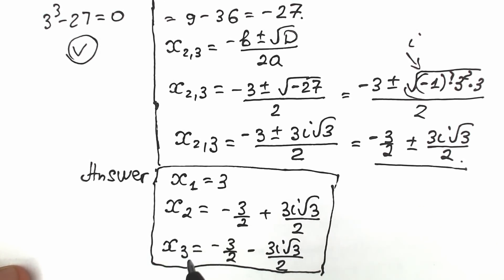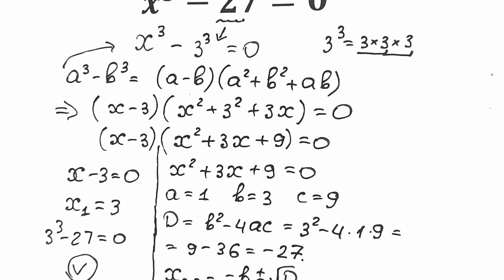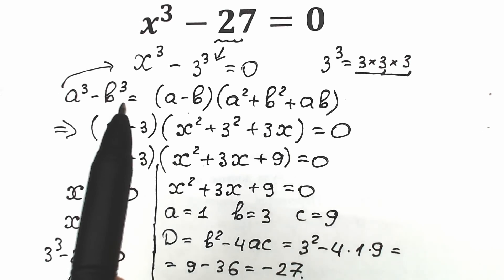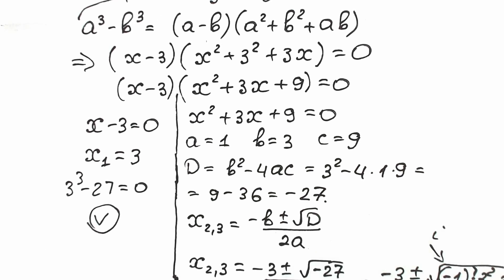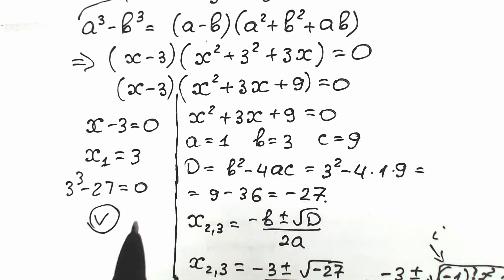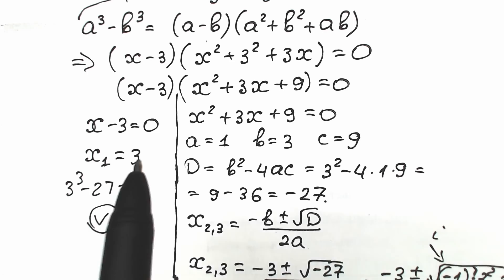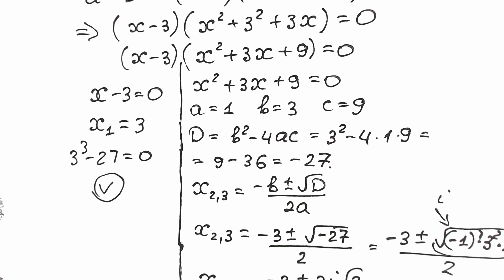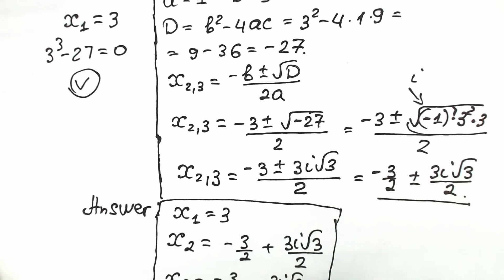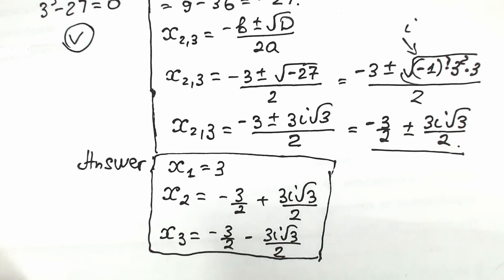When you solve this challenge in just one line, it is not good for your teacher to read. Imagine writing x equals 3 as the only solution on an exam. But if you solve it step by step like this, with all solutions shown, it looks like a proper solution. x equals 3 alone is not the complete answer — this full step-by-step solution with all roots is what we really need.